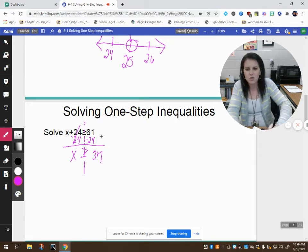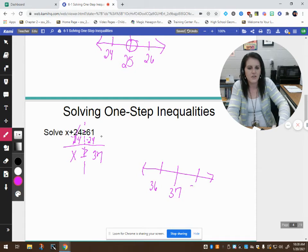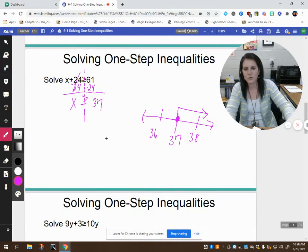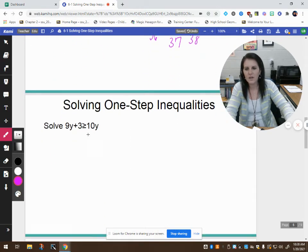So again we're going to draw our line. This time I'm going to do 36, 37, and 38. We're going to do a closed circle because it says it can be bigger than 37 or it can be exactly 37. So we're pointing towards all the values greater than or equal to 37.